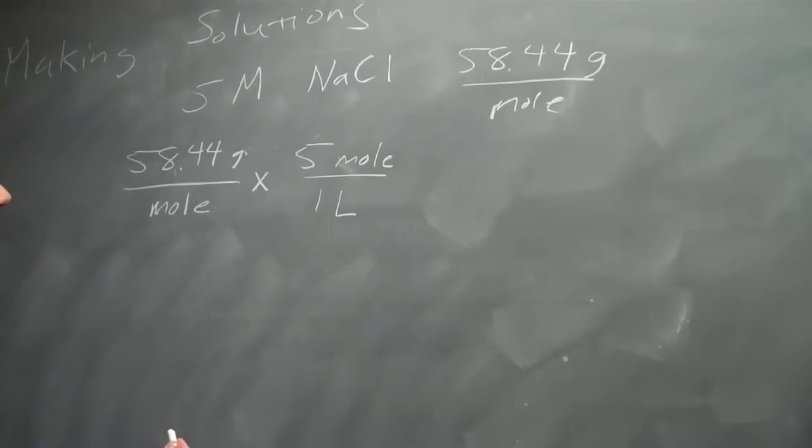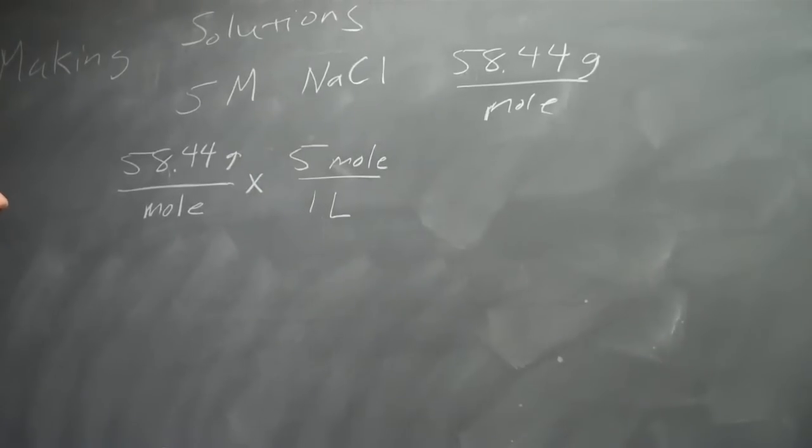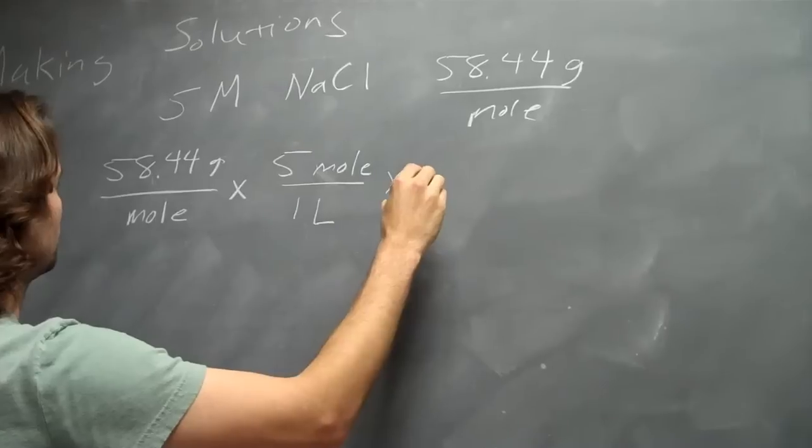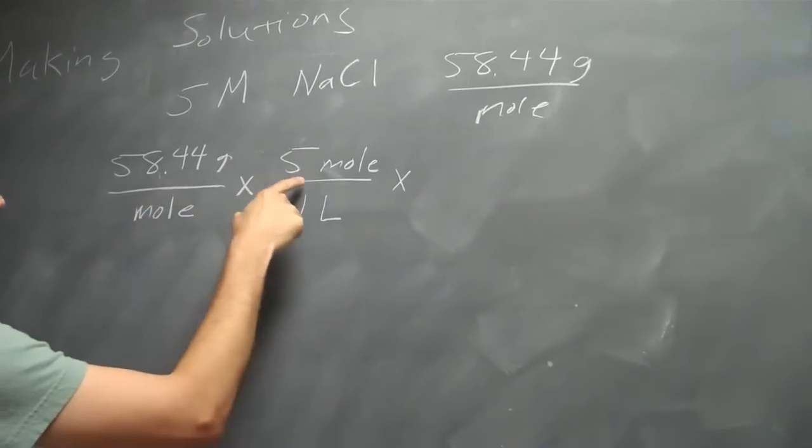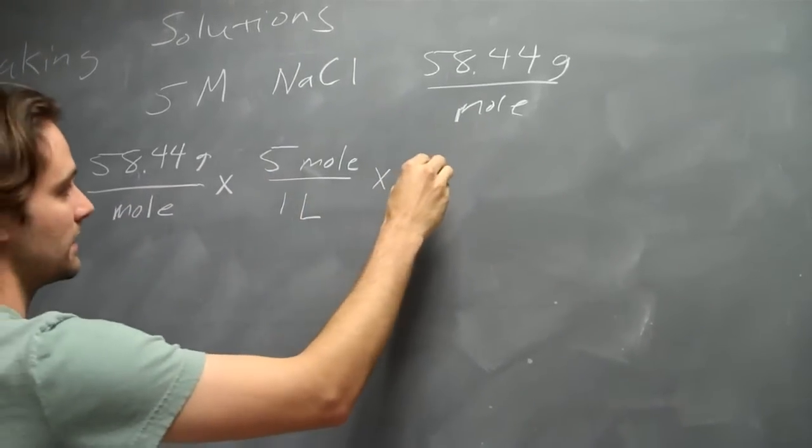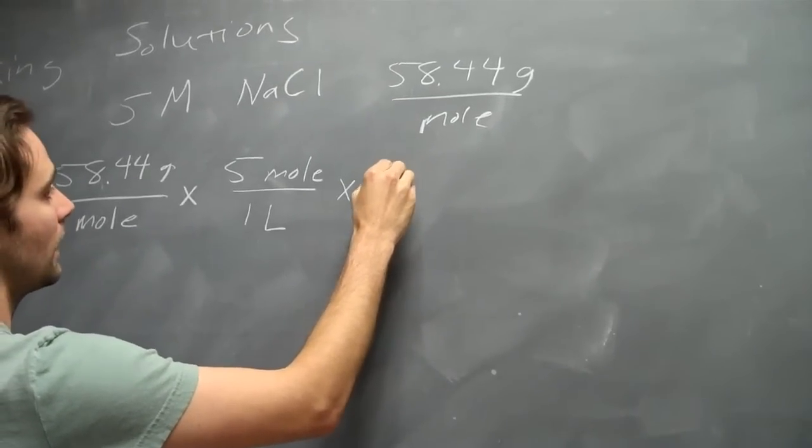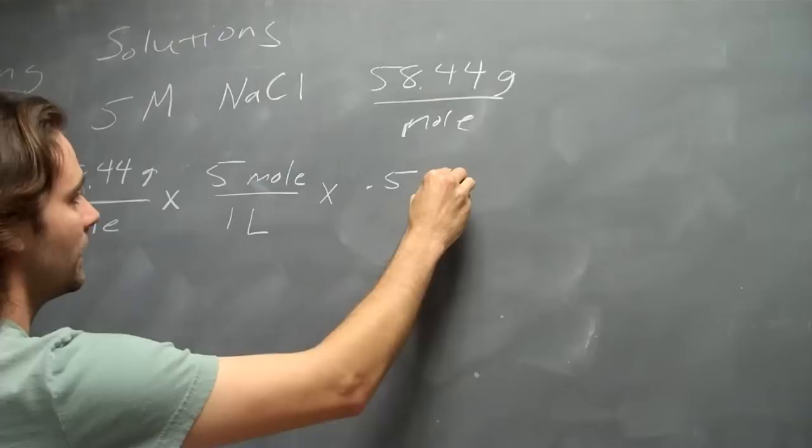And let's say you want to make 500 milliliters of this solution. So you take your molecular mass times how many moles you want, times the volume that you want to make of your total solution. And that would be .5 liters.